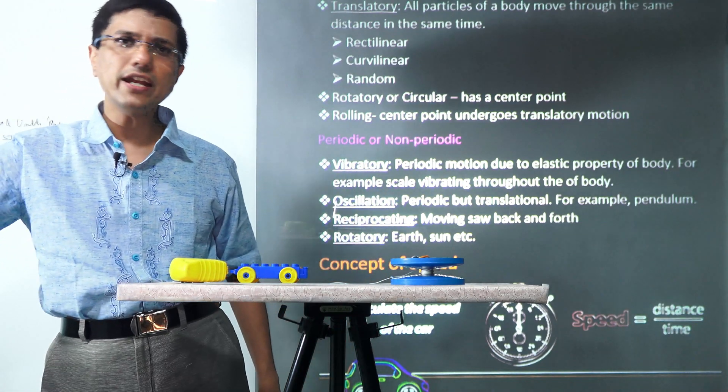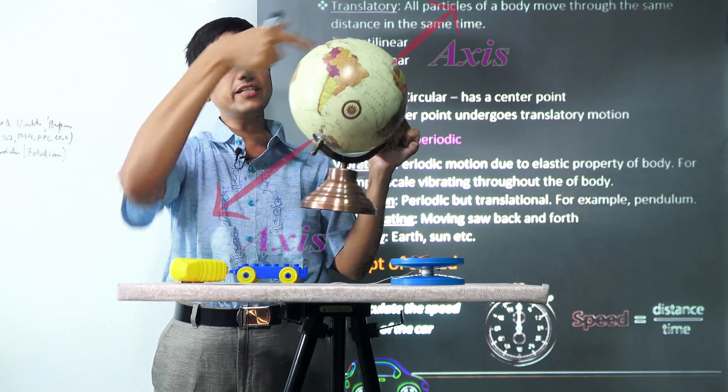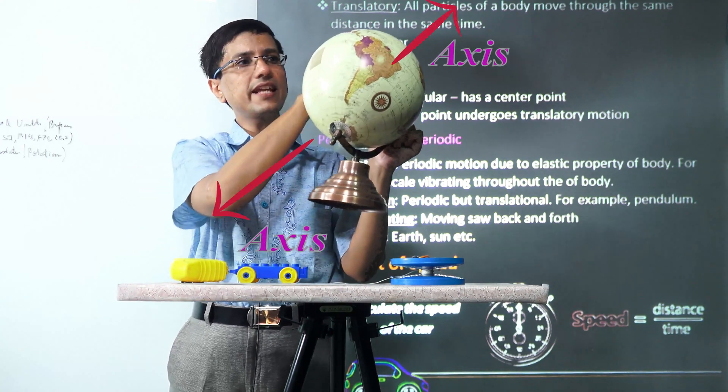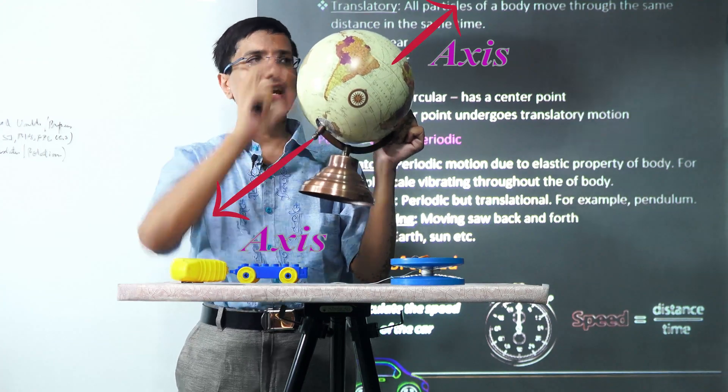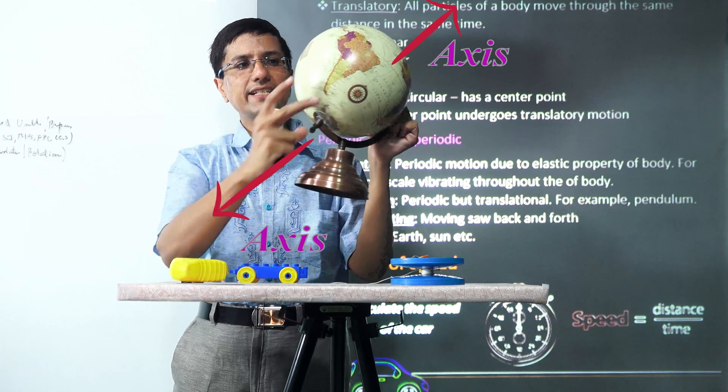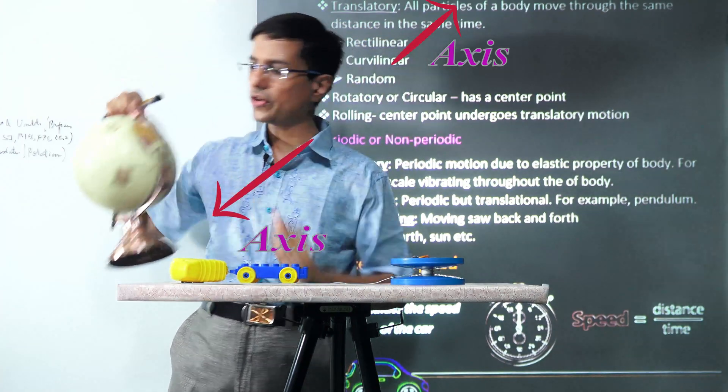Rotary motion happens when things rotate around an axis. This is the axis. The axis of rotation passes through the object itself, and around this axis all of the object is moving. This is rotation.